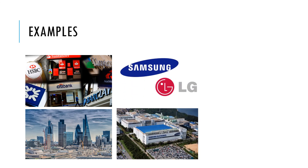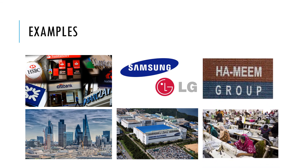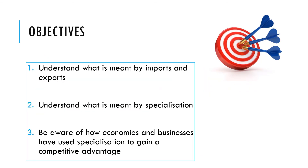In Korea, an example might be specialization in electronics — the education system and economic environment enable these countries to specialize, become the best quality at the lowest cost, and gain a competitive advantage. Similarly in Bangladesh, specialization in the textile industry allows businesses to gain an advantage and become the lowest cost producer. In this video we've looked at what is meant by imports and exports, specialization, and how economies and businesses can use specialization to gain a competitive advantage.